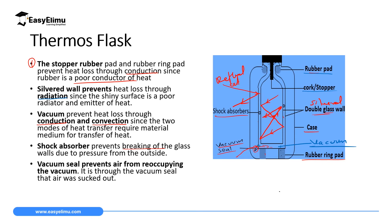So we have discussed the thermos flask and how it works. It has rubber and rubber band rings which prevent heat loss by conduction. It has double silvered walls to prevent heat loss by radiation, since they can reflect heat. The vacuum between the double walls prevents heat loss through conduction and convection. The vacuum seal prevents air from entering the vacuum. Shock absorbers prevent the flask from breaking.